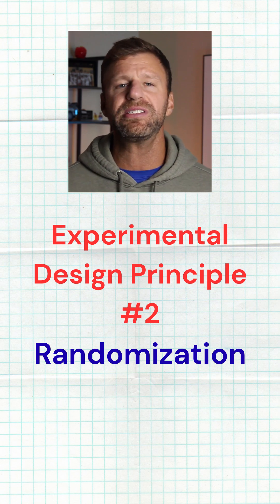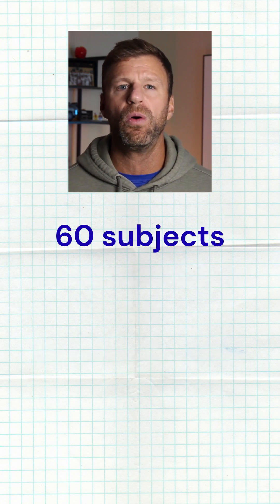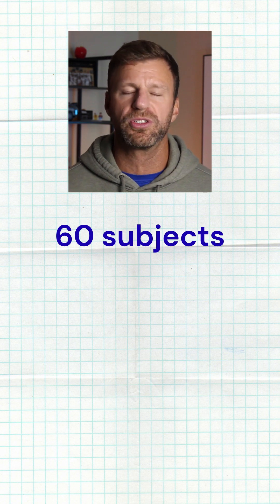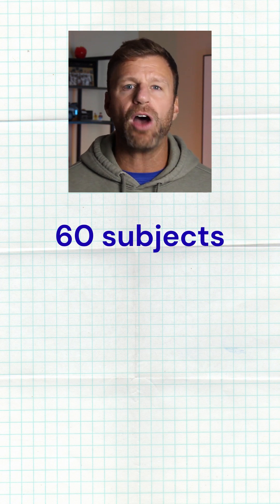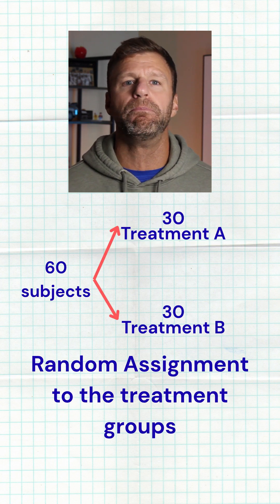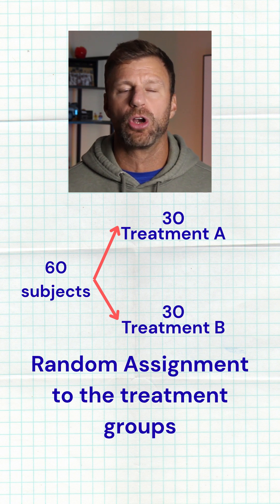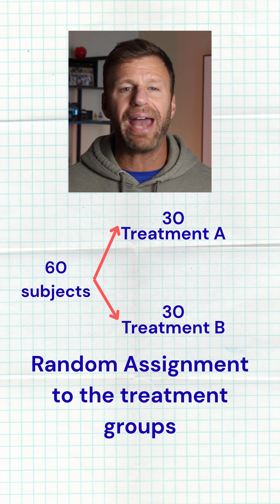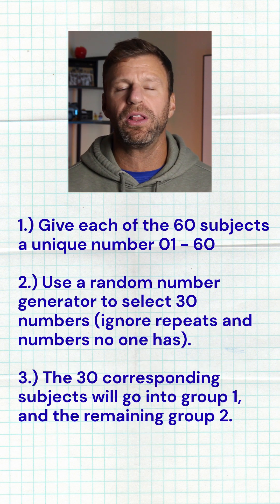Let's say we have 60 subjects ready to go and we have two experimental or treatment groups. How do we determine who gets what? It must be determined completely at random — that is a huge pillar.